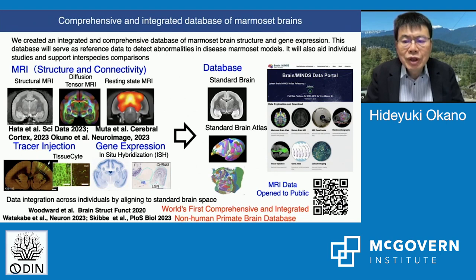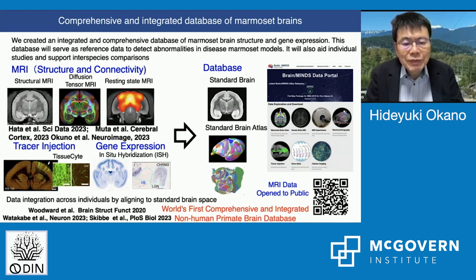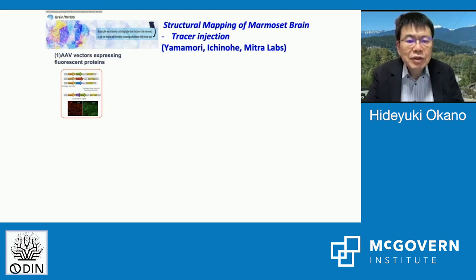It will also aid individual studies that support inter-species comparisons. The data includes MRI structure and connectivity, tracer injection data, and gene expression data such as in-situ hybridization — all integrated in the standard brain space. This will be the first comprehensive and integrated non-human primate brain database.